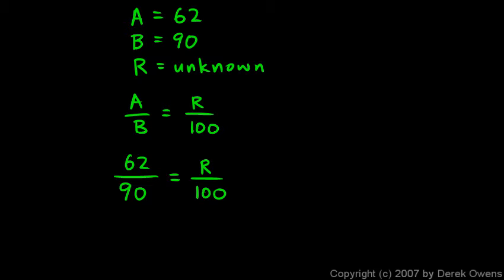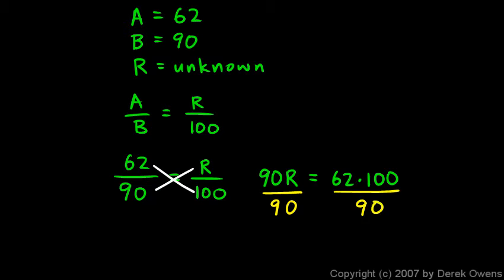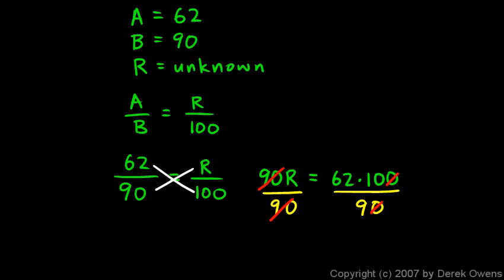To solve for r, we cross multiply: 90r = 62 × 100. Dividing both sides by 90 gives r = 6200/90. We can cancel a zero to get 620/9, and dividing 620 by 9 on the calculator gives approximately 68.9 percent.